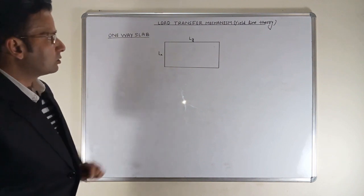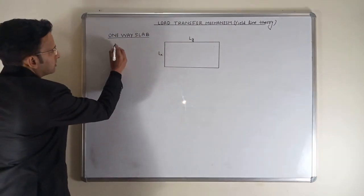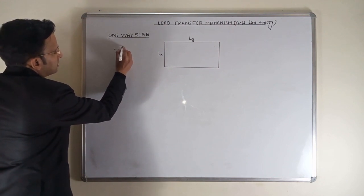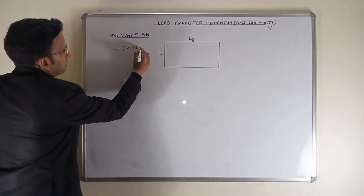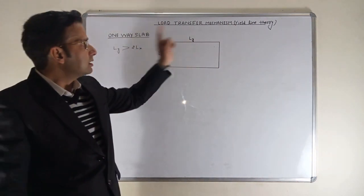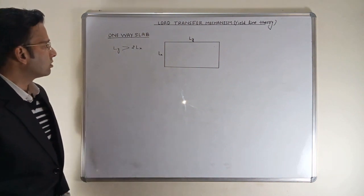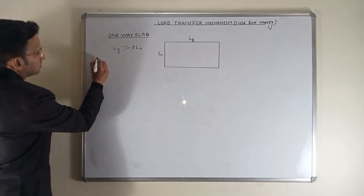Let's suppose this is one one-way slab. You might know what the one-way slab is. One-way slab is nothing but for which Ly is greater than two times Lx. Lx is the shorter dimension of the slab and Ly is the larger dimension of this slab.